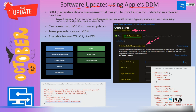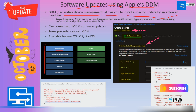What does DDM do? DDM — declarative device management — allows you to install specific updates by an enforced deadline. If you look at the DDM stack, declarations and status are the main components, and underneath those you would be able to see different sub-components. We will see more details and diagrams during the demo session.